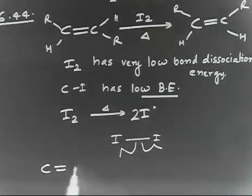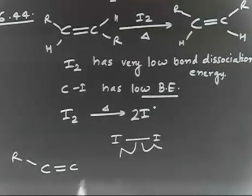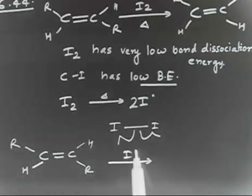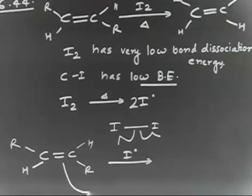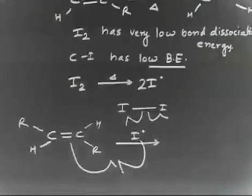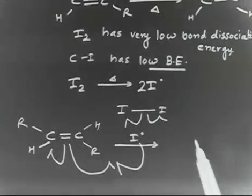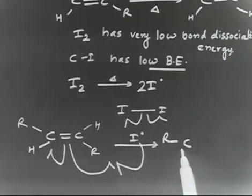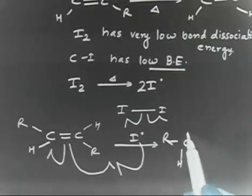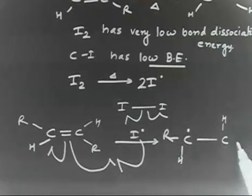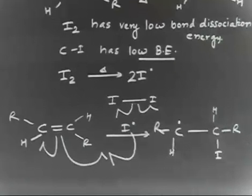Now take the trans-alkene. If you treat this trans-alkene with I•, the iodine radical acts as a radical initiator. One electron from the π bond and one electron from I• combine to make a bond, and the remaining electron goes onto the carbon. So you will have C(R)(H) with a radical on one carbon, and C(H)(R)-I on the other.